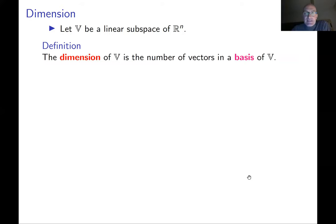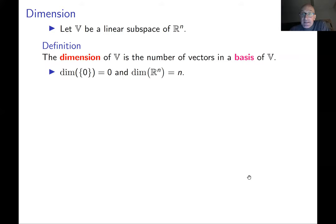In particular, the zero subspace has dimension zero — it has no vectors except the zero vector, and zero vector is always linearly dependent so there is no basis. At the other extreme, R^n has dimension n: the standard basis e1, e2, en is linearly independent and spans R^n, so it is a basis, and since any basis has the same number of elements, the dimension must be n.